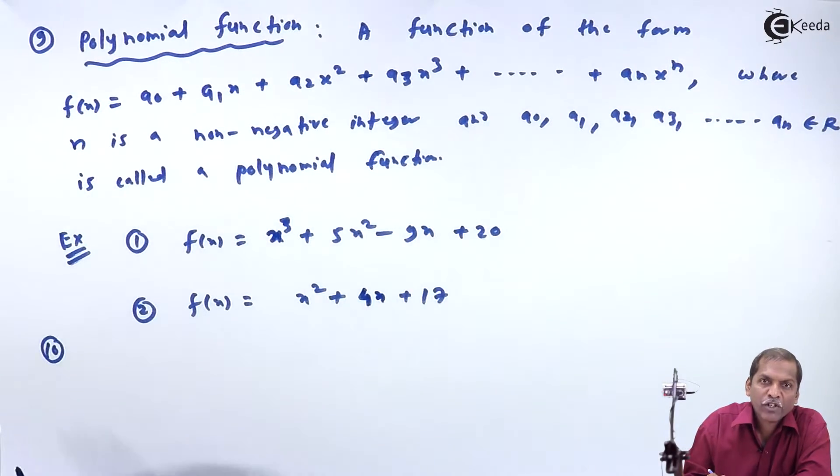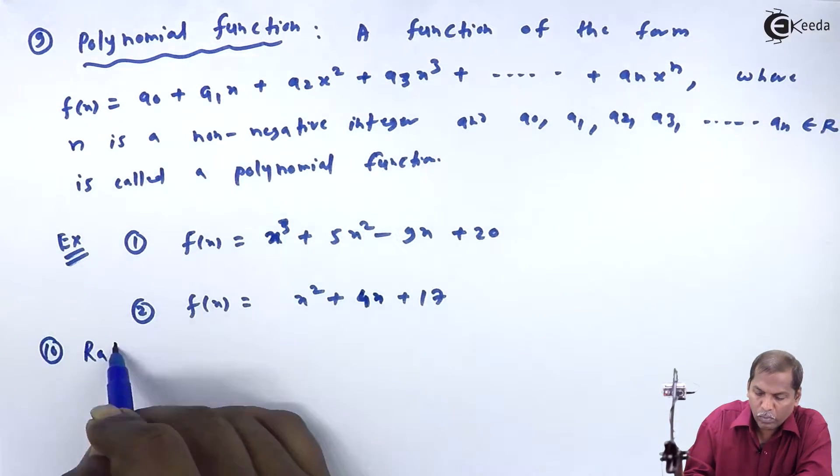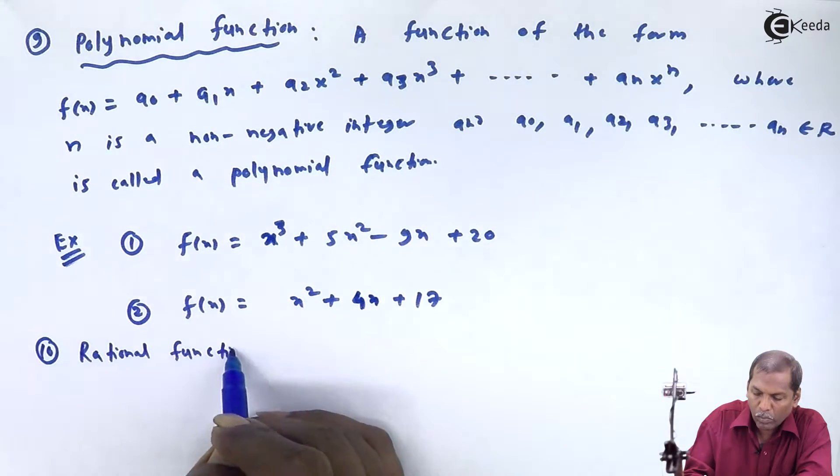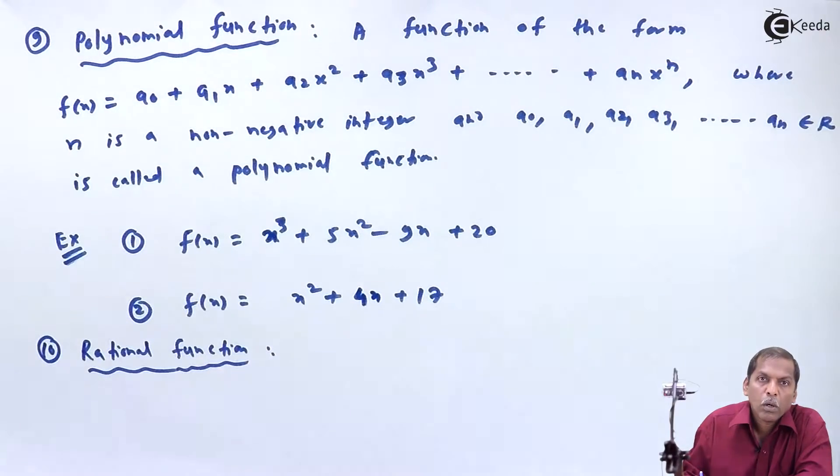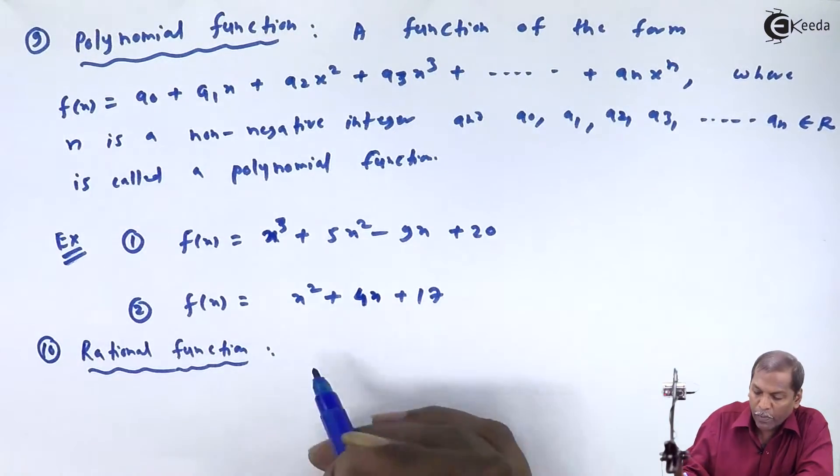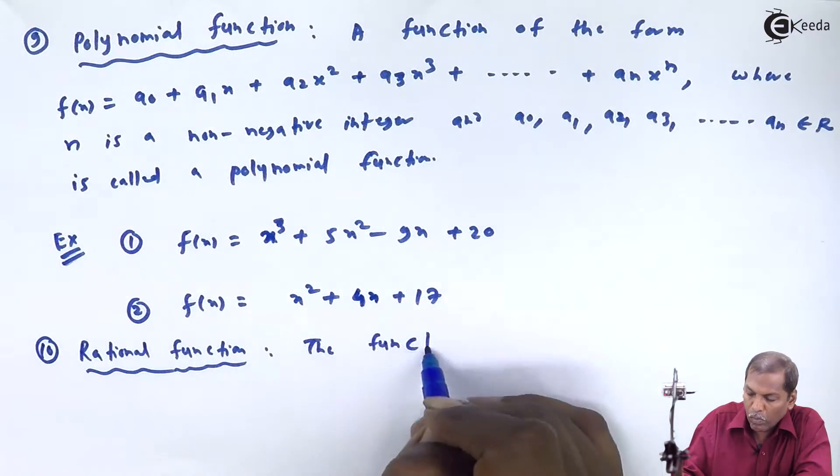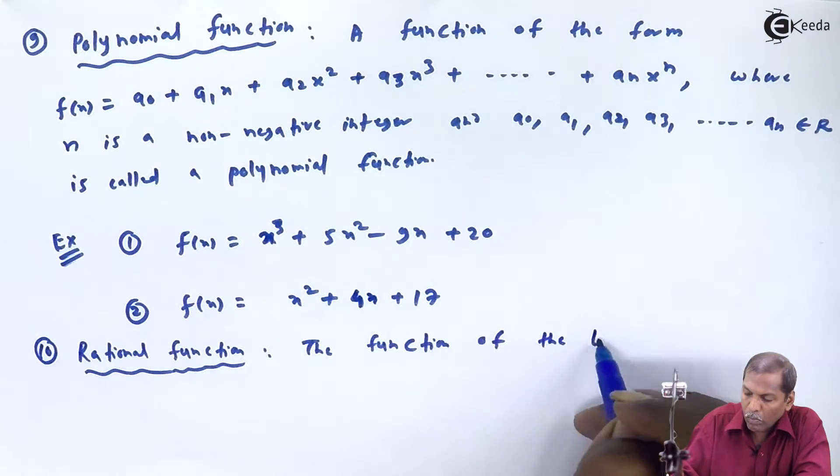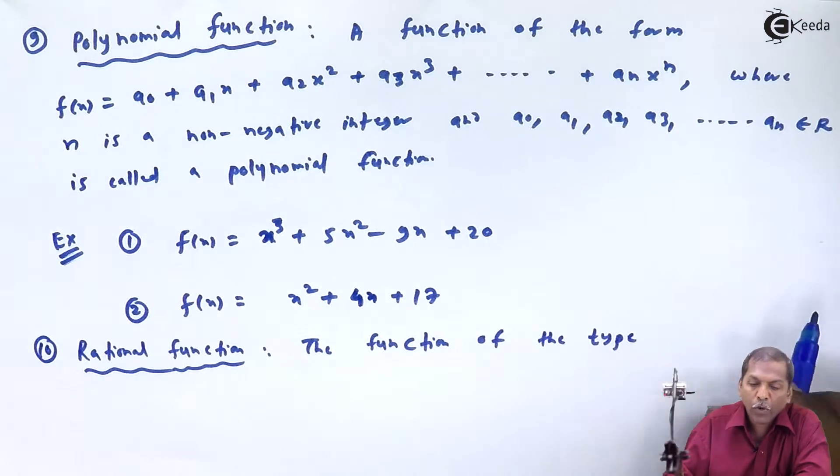Type Number 10: Rational Function. The function of the type f(x) upon g(x)